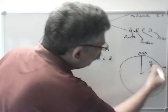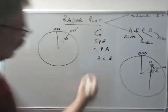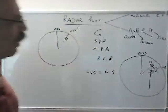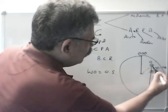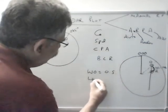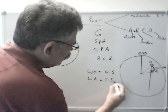So WO is your own ship's course and speed. And then you join WA.